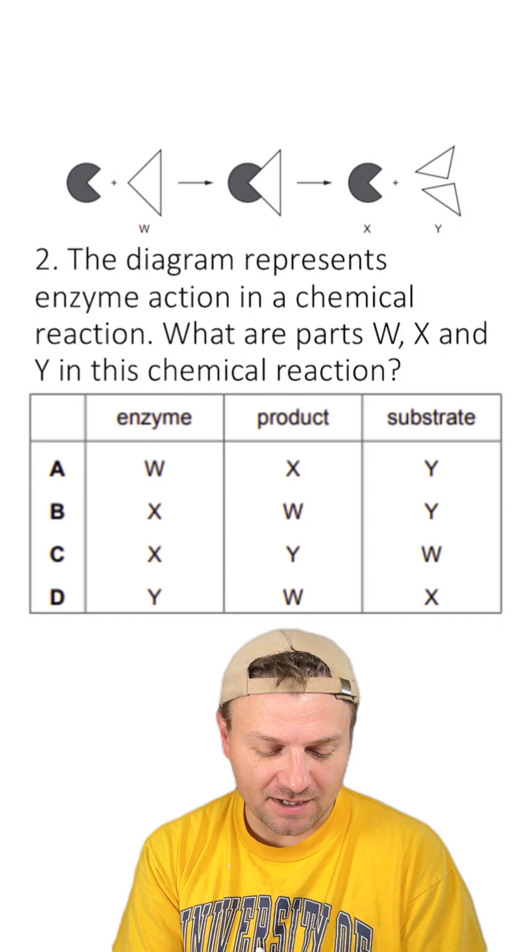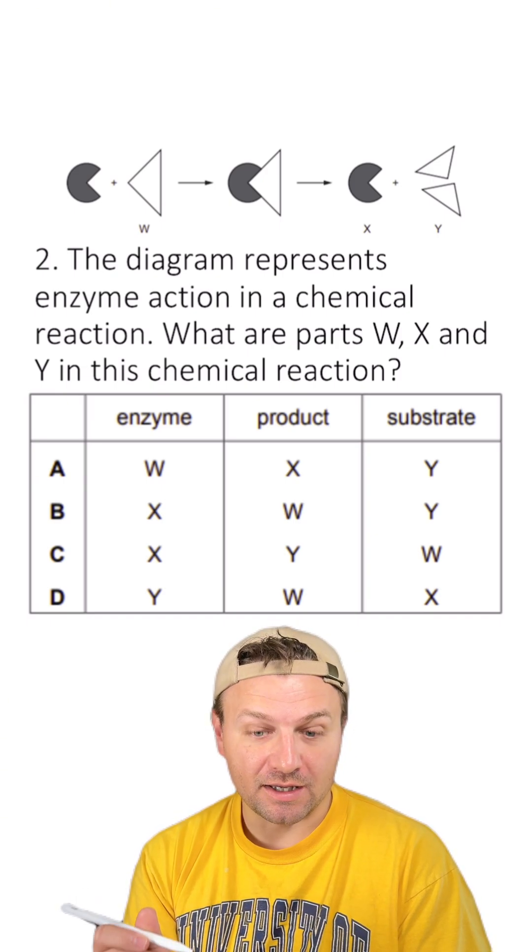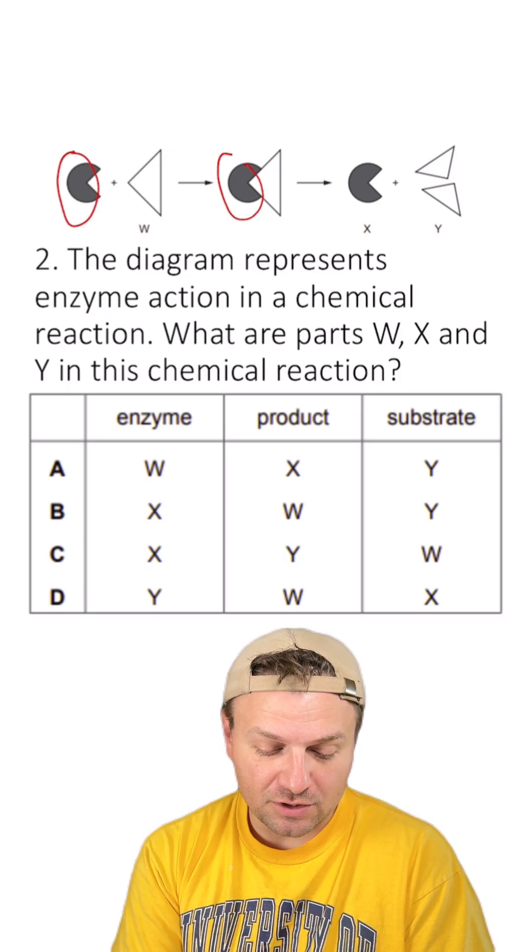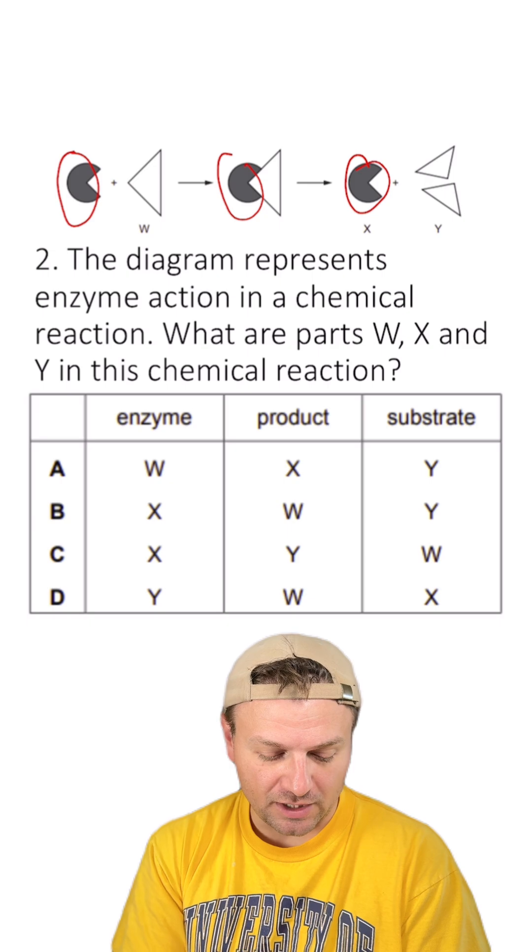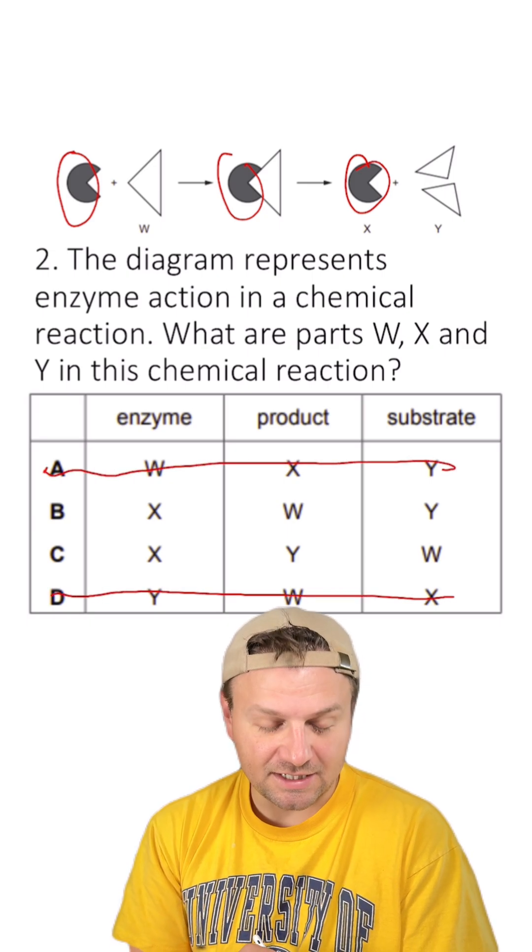Here's the second question. The diagram represents enzyme action in a chemical reaction. What are the parts W, X, and Y in this chemical reaction? We know that X here is going to be the enzyme since it's unchanged. So looking at our answers here, it can't be A and it can't be D.